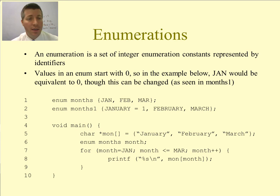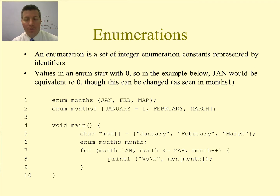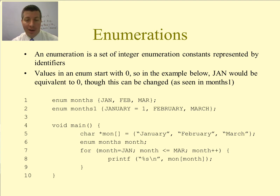Now, enumerations — this is our second topic for today, and my last slide before the program. An enumeration is just a set of integer enumeration constants represented by identifiers. This is a way that I can create identifiers to represent integer values. Take a look at line one: I say 'enum' — that's the keyword for enumeration — I give my enumeration a name, in this case 'months,' open the curly brace, and put values inside. The first one has value zero, the second has value one, the third has value two, and so on. If I wanted to change that so it starts somewhere else, I can do it like on line two, where I say 'enum months1' and set January equals one — now February gets the value two, March gets three, and it just continues incrementing after that.